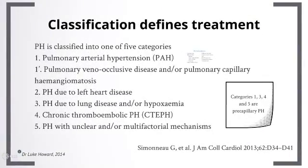The most important aspect of the diagnosis of pulmonary hypertension is obtaining the correct classification, since classification defines treatment. At the most recent World Symposium of Pulmonary Hypertension held in Nice in 2013, pulmonary hypertension was reclassified according to the following five categories.